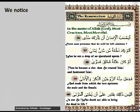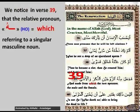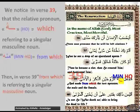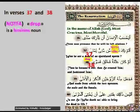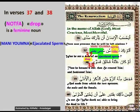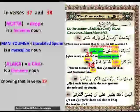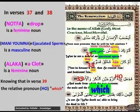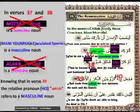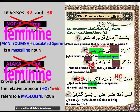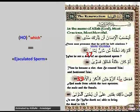We notice in verse 39 that the relative pronoun 'ho' means 'which', referring to a singular masculine noun, and 'min ho' means 'from which'. In verses 37 and 38 we have in Arabic: 'nutfa' (drop) which is a feminine noun; 'mani yumna' (ejaculated sperm) which is a masculine noun; and 'alaqa' (a clot) which is a feminine noun. Knowing that in verse 39 the relative pronoun 'ho' refers to a masculine noun, 'drop' and 'clot' are automatically excluded since they are feminine nouns. Therefore we conclude that the relative pronoun 'ho' designates the unique masculine noun, namely 'ejaculated sperm' — mani yumna.